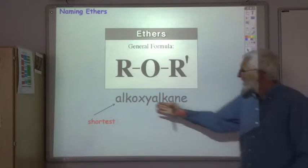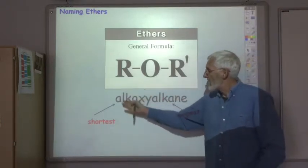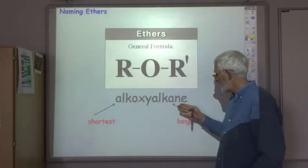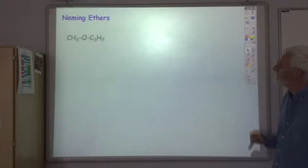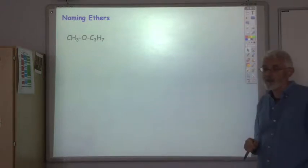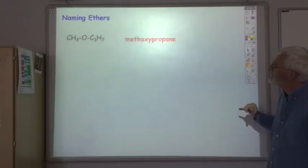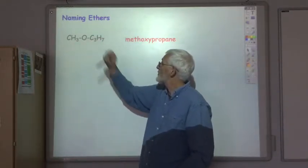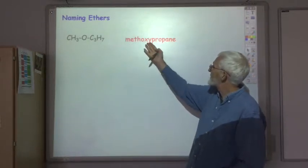So let's try a few. So remember they'll all be something like alkoxyalkane with the alkyl group in the first part of the name has got to be smaller than the alkyl group in the second part of the name. Okay so think about what that is. Okay so that was methoxypropane. We've got a methyl group and a propyl group. So the methyl group smaller so it goes first, methoxypropane.